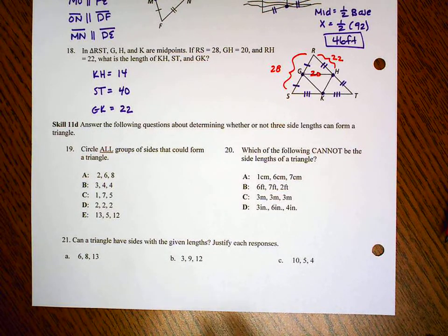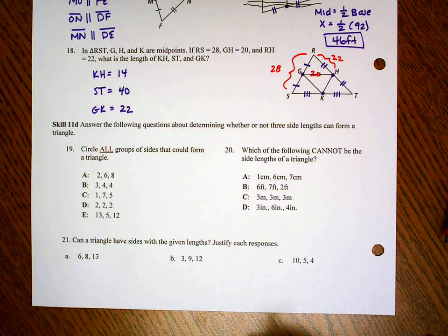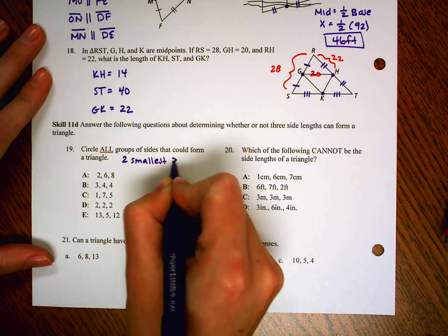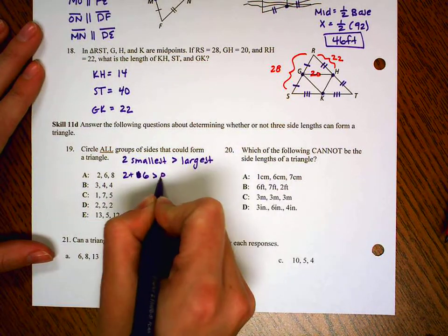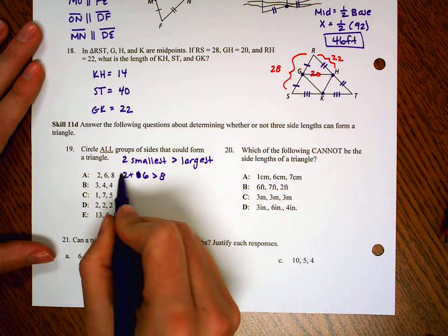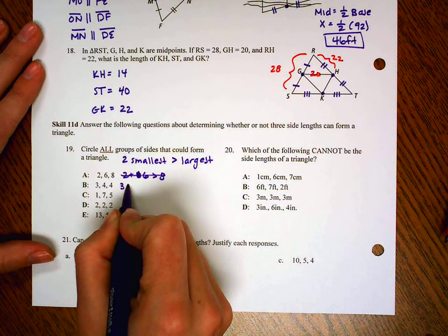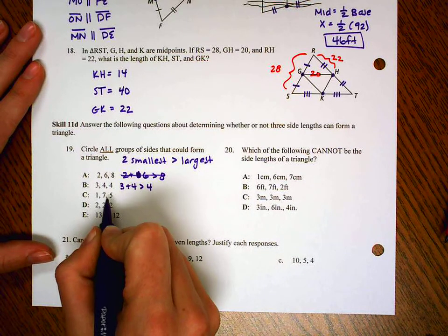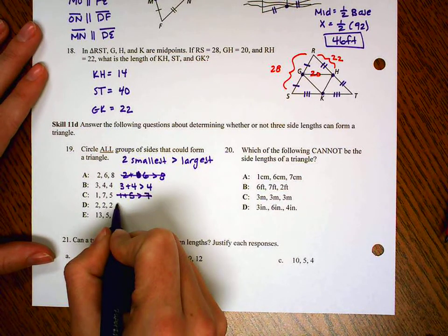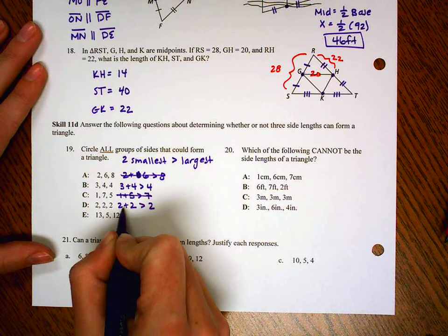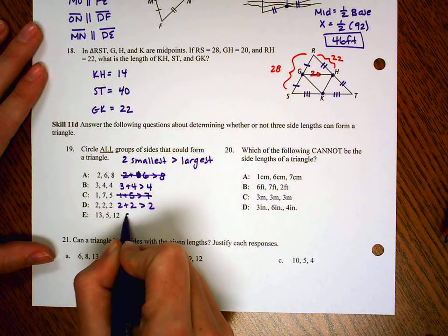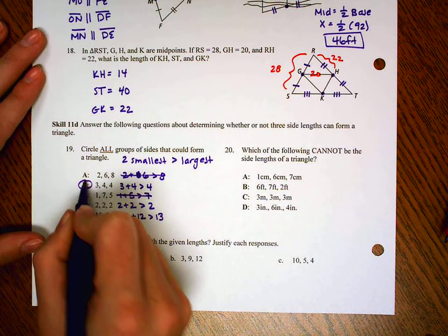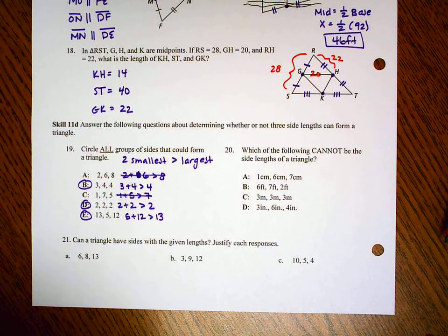Number 19 says, circle all groups of sides that could form a triangle. Well remember, in order to form a triangle, the two smaller sides have to be larger than the third longest side. So two smallest have to be bigger than the largest. So the smallest are 2 and 6 bigger than the largest. Well, nope, 8's not bigger than 8, so no good. 3 and 4 are the smallest. Is that bigger than the largest 4? 7 is bigger than 4. Yep. 2 and 5. Are 1 and 5 bigger than 7? Nope. 2 and 2 are the smallest. Are they bigger than 2? Yep, 4 is bigger than 2. The smallest here are 5 and 12. Are 5 and 12 together bigger than 13? Yep, 17 is bigger than 13. So these three here can form, those three numbers, they can be the side lengths of a triangle.